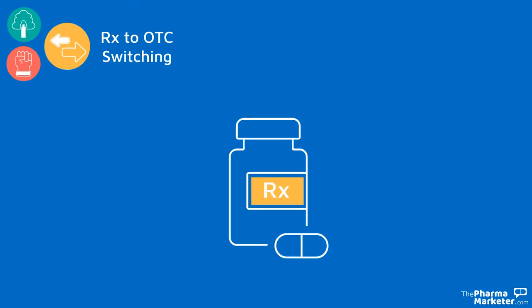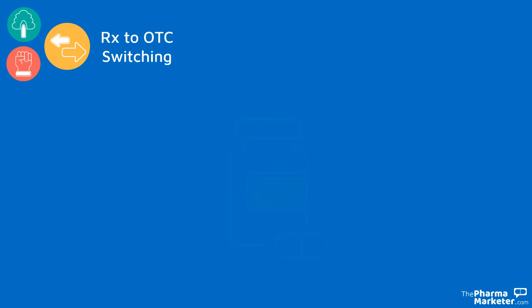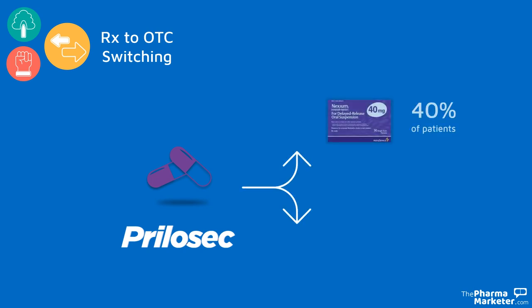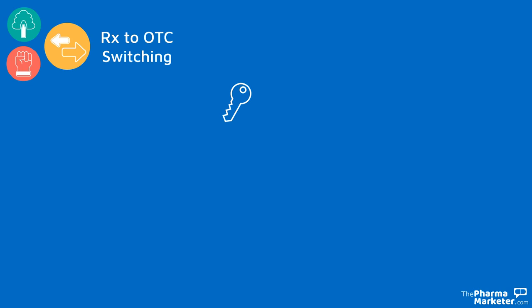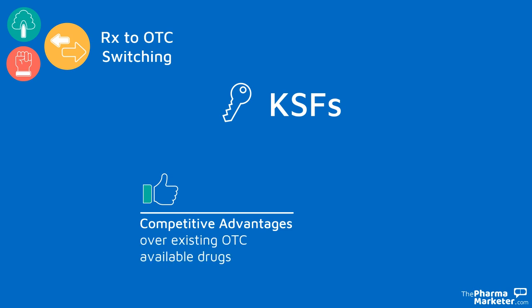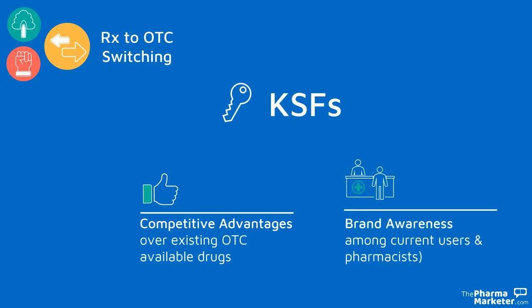The third strategy is switching from Rx to OTC. This strategy is appropriate when a branded drug whose patent is about to expire gains FDA approval for OTC sale. The switch will make the market unattractive for generics. AstraZeneca succeeded in keeping 40% of Prilosec patients by introducing them to Nexium, and shortly afterward Prilosec gained OTC status, keeping generic competition from flooding the market and taking AstraZeneca's revenue and market share. To successfully switch a product from prescription to OTC, it should have a competitive advantage over existing available drugs and a high level of brand awareness among current users and pharmacists.